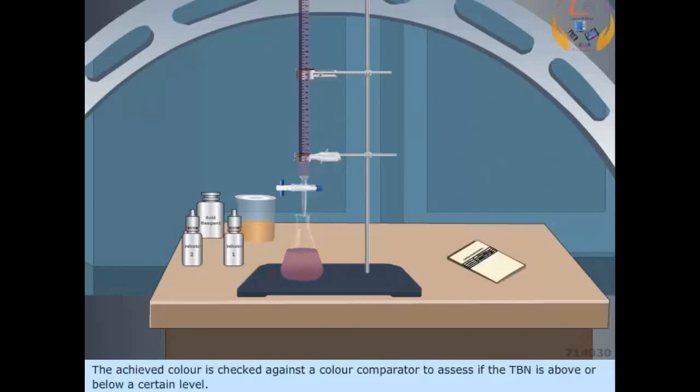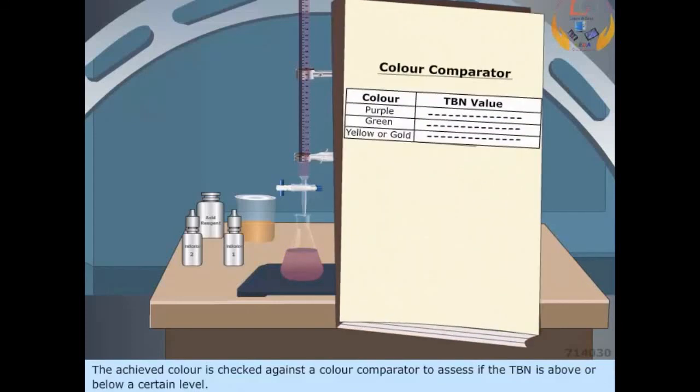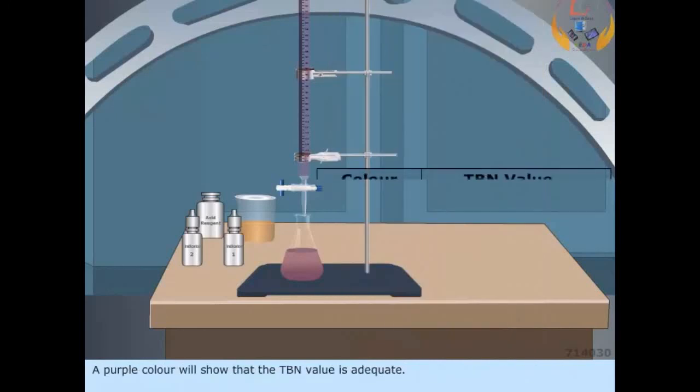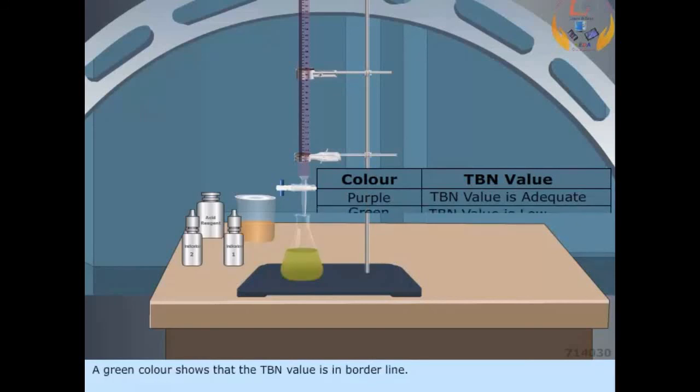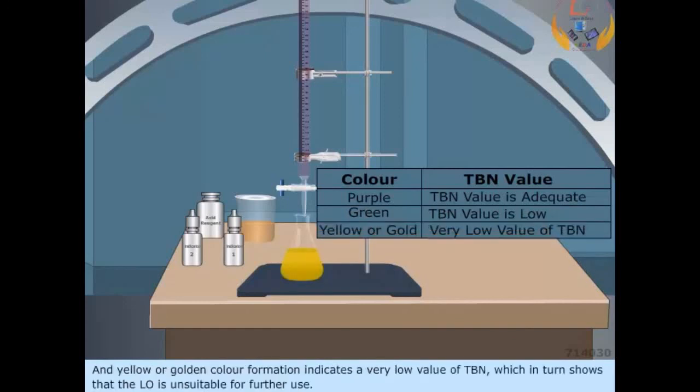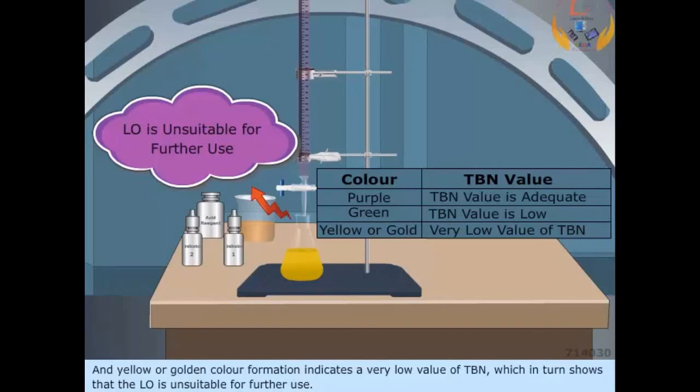The achieved color is checked against a color comparator to assess if the TBN is above or below a certain level. A purple color will show that the TBN value is adequate. A green color shows that the TBN value is in borderline. And yellow or golden color formation indicates a very low value of TBN, which in turn shows that the lubricating oil is unsuitable for further use.